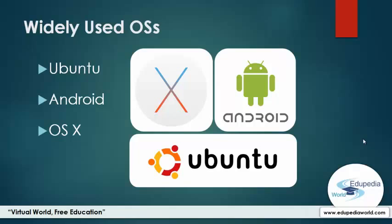If you cannot afford expensive proprietary operating systems, there is a solution. You can use free operating systems distributed under the GNU GPL license — there is no cost. The best example is Ubuntu. It's an operating system based on Linux. You can freely download it from their website. And not only Ubuntu, there are many freely available operating systems based on Linux.